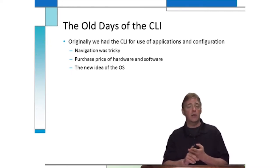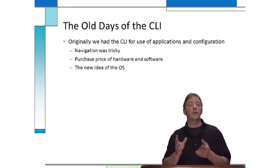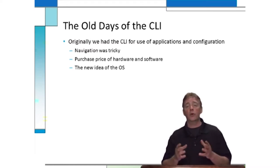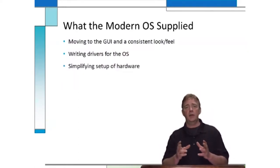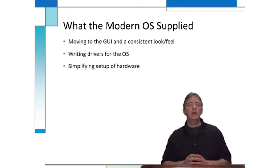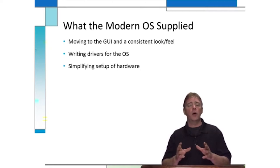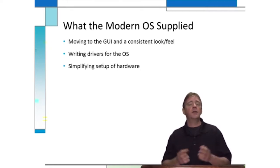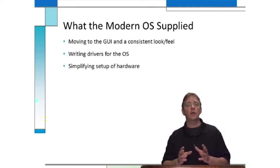That idea did drive down a lot of the cost of software programs. You can imagine if you find some programs expensive now, how much more expensive they would be if the people making them had to ensure they could work with all the different hardware devices attached to your computer or network. So what the modern operating system gave us was a visual interface — something we call the graphical user interface — and the idea behind that was to give you a consistent look and feel.